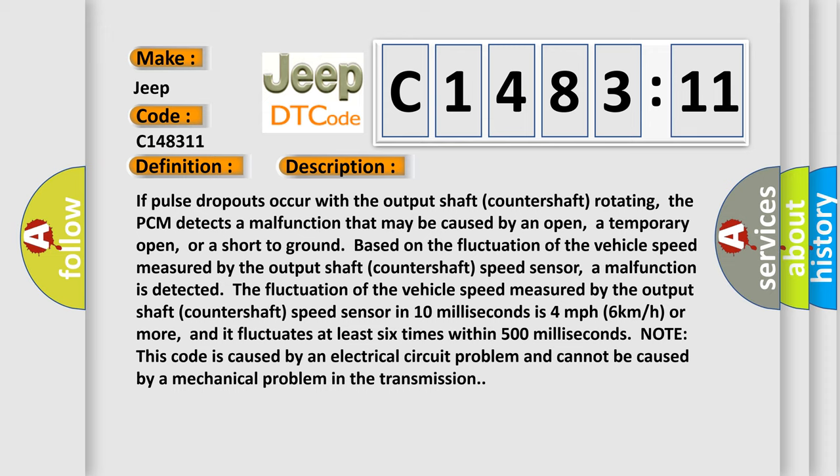In 10 milliseconds, the speed is 4 miles per hour (6 kilometers per hour) or more, and it fluctuates at least 6 times within 500 milliseconds. Note: this code is caused by an electrical circuit problem and cannot be caused by a mechanical problem in the transmission.